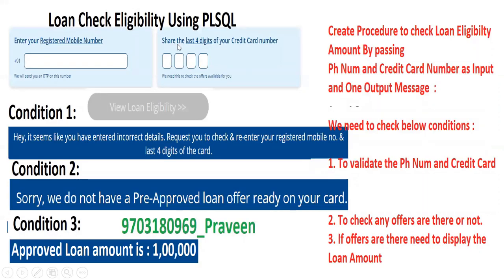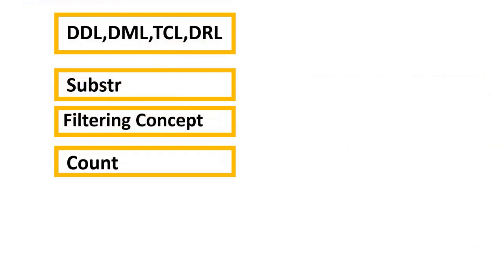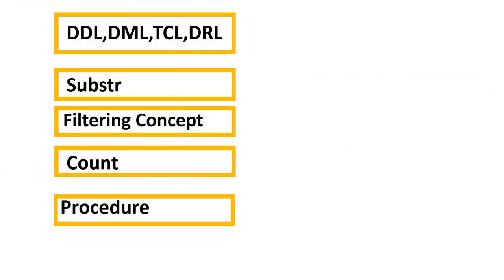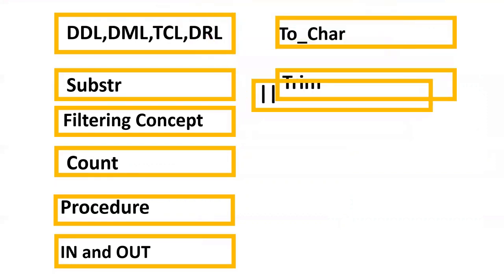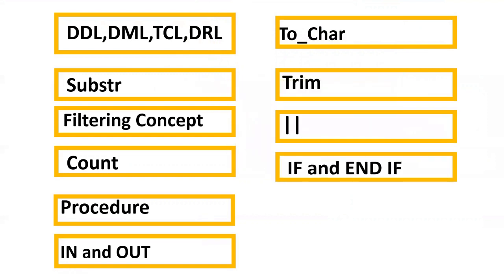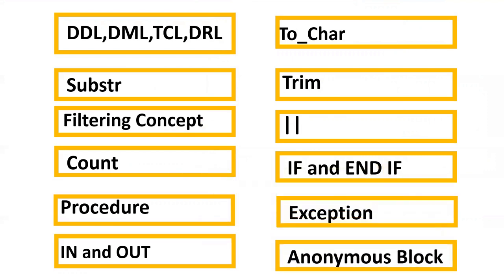So two input parameters and one output parameter, with some validations. To solve this requirement, you should have a better understanding of the following concepts: DDL (Data Definition Language) for table creation, DML (Data Manipulation Language) for INSERT, TCL (Transaction Control Language) for COMMIT, DRL for SELECT statements, SUBSTR to extract part of a string, filtering with WHERE and AND, COUNT as an aggregate function, procedure syntax, IN and OUT parameters, TRIM to remove spaces, pipe symbol to concatenate strings, IF conditional statements, and exception handling.